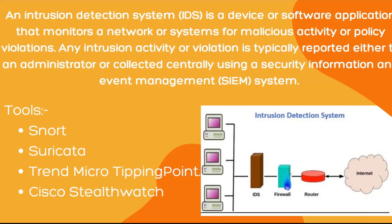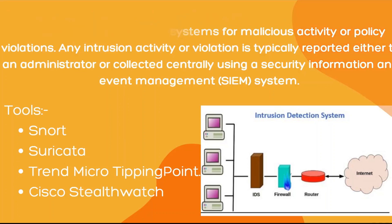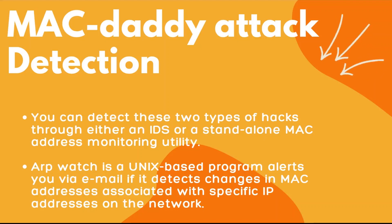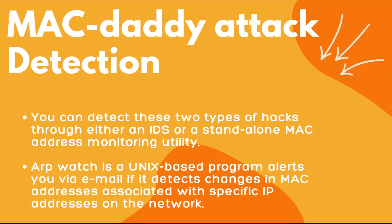Let's look at the different IDS tools: Snort, Suricata, Trend Micro TippingPoint, and Cisco StealthWatch. The second method for detecting MAC Daddy attacks is by using ARP Watch. ARP Watch is a Unix-based program that sends alerts via email if any changes are detected in the MAC addresses of a specific IP address on the same network. By following these two techniques, we can detect MAC Daddy attacks.